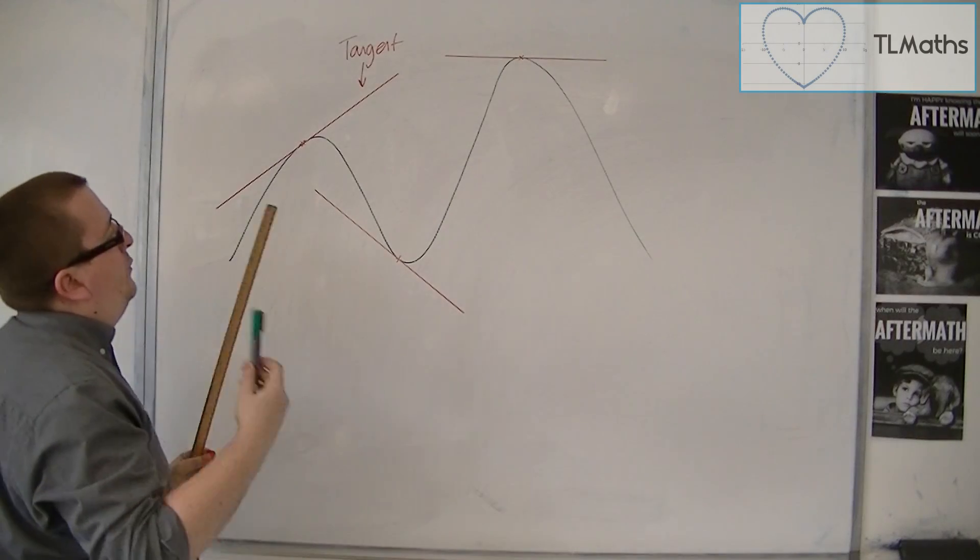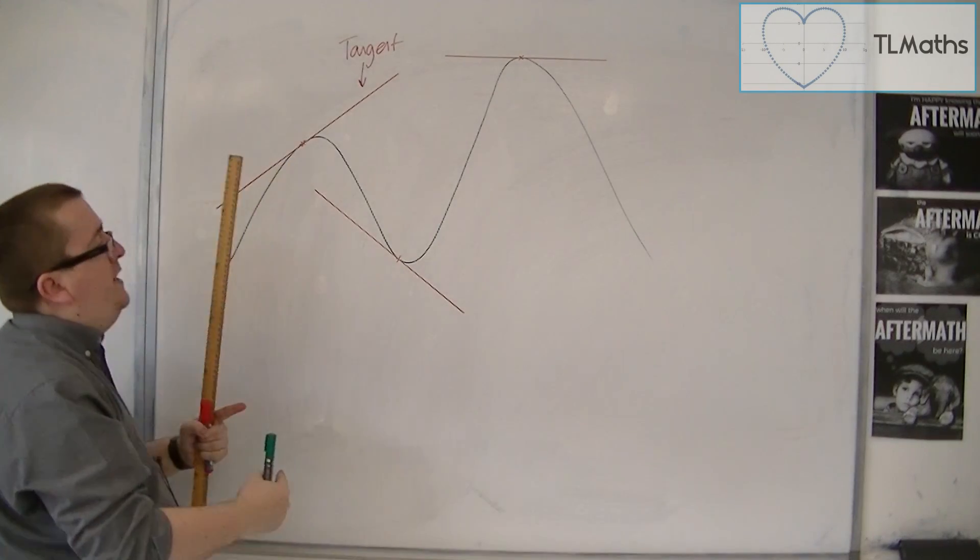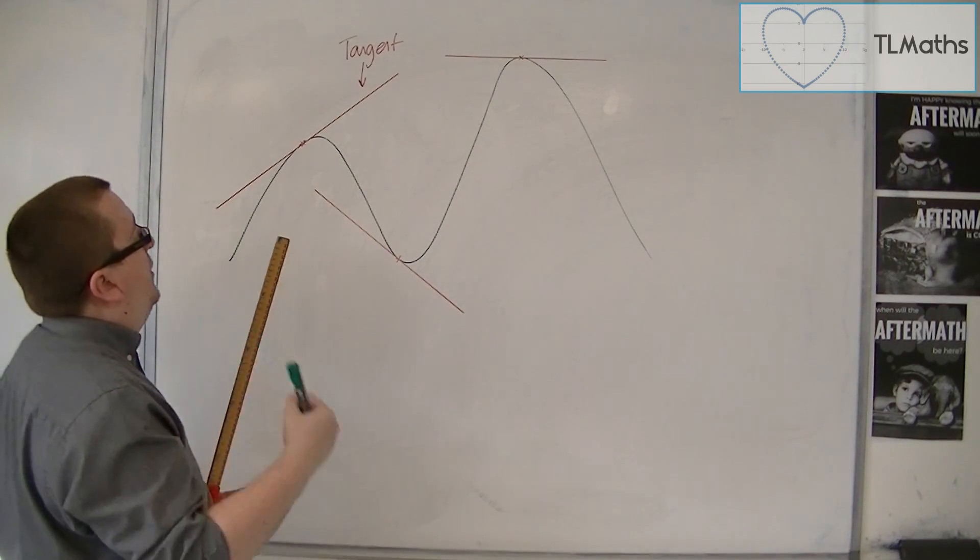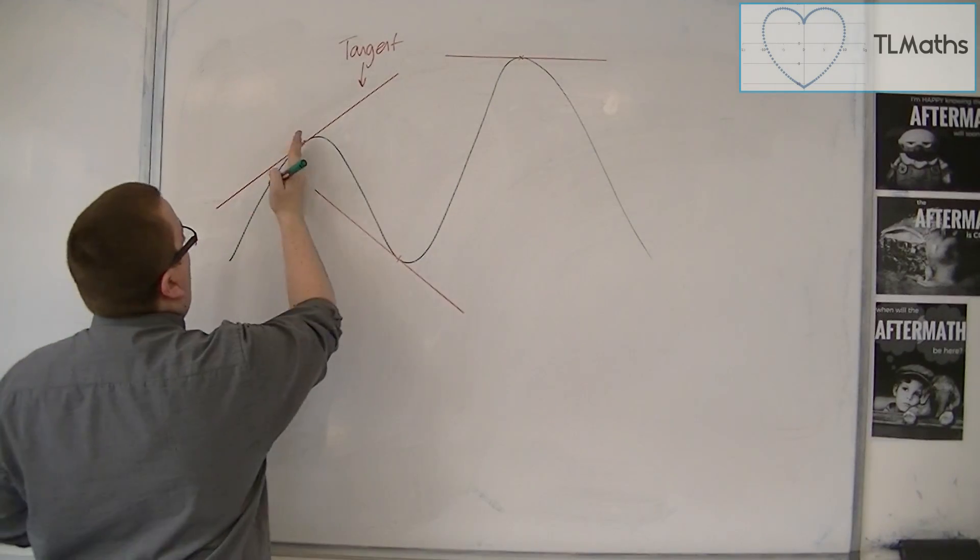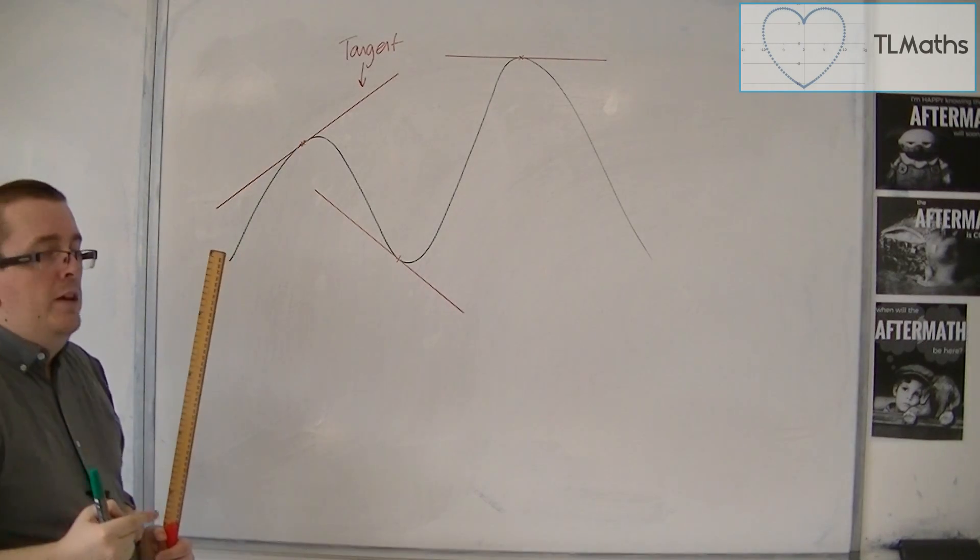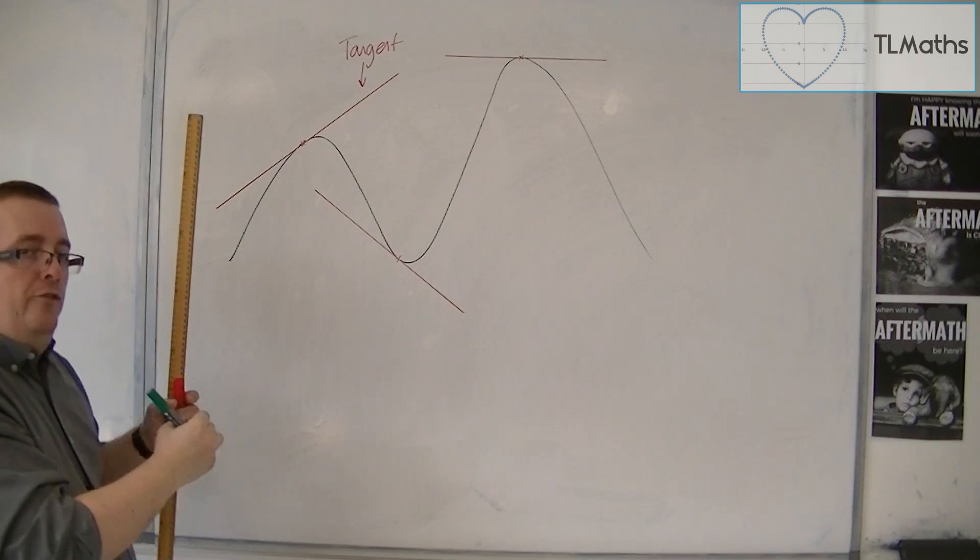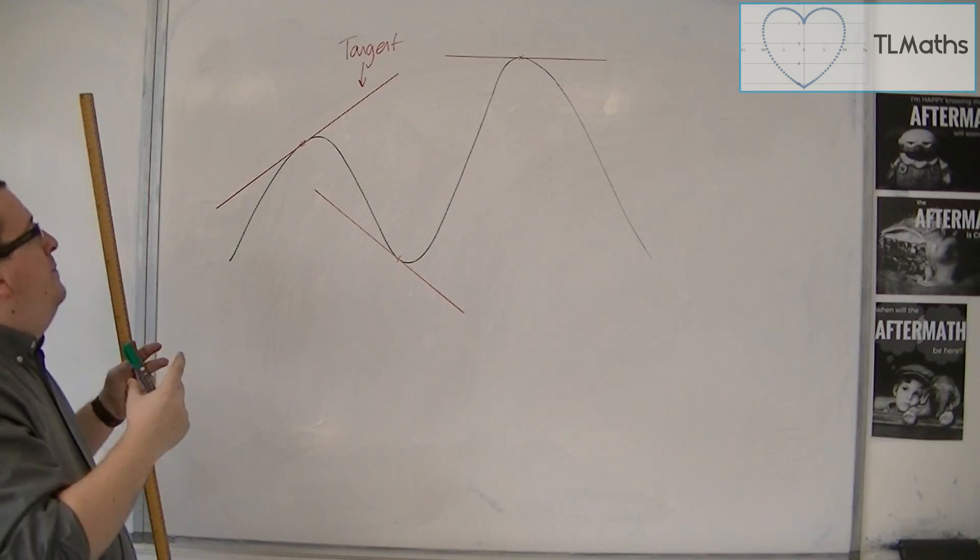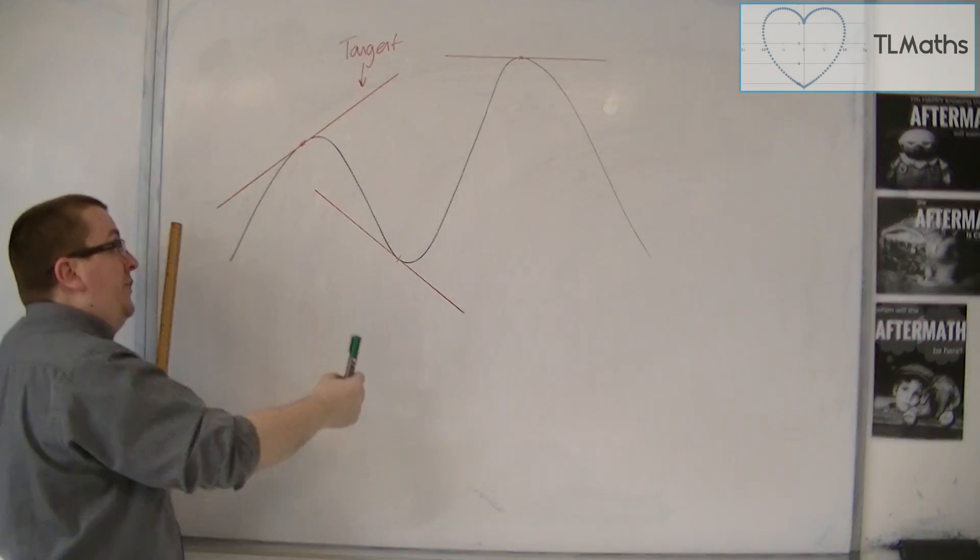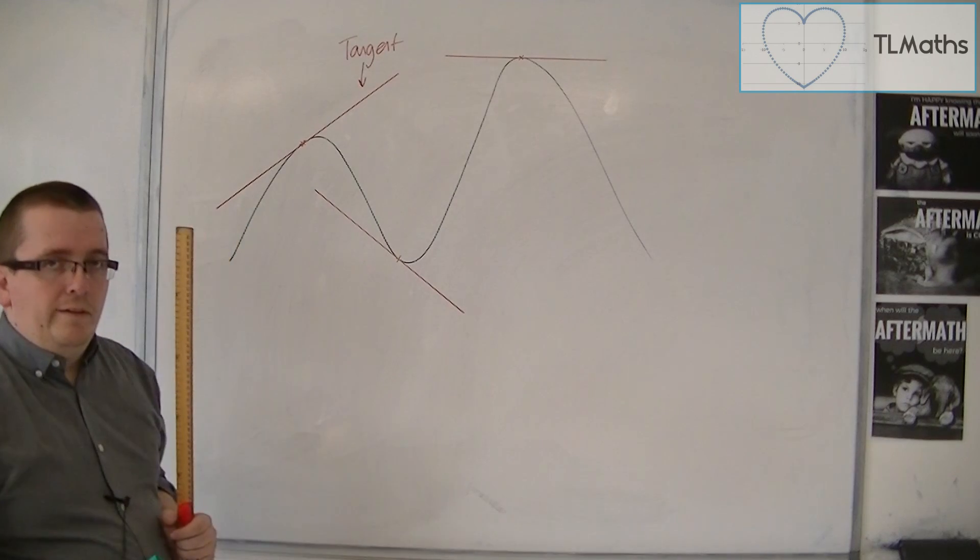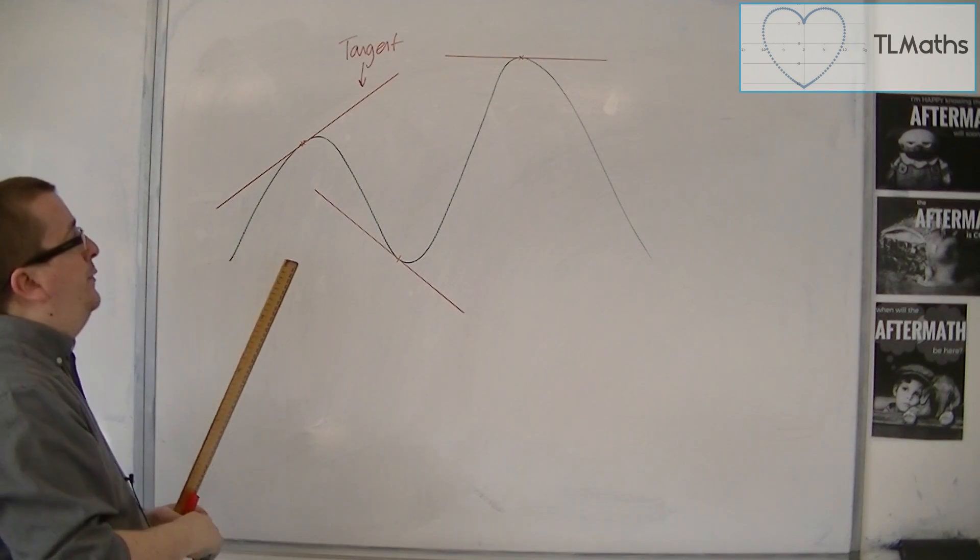Now, as we know now, we can find the gradient of this tangent line by substituting the x-coordinate of that point into dy by dx. So we can get the m from y equals mx plus c for it. Now, in order to find the c, we would have to substitute the coordinates of that point in. And we're going to see examples of this in the coming videos.